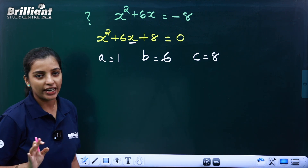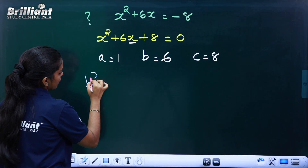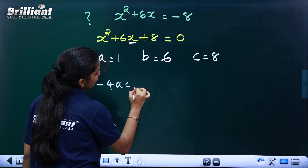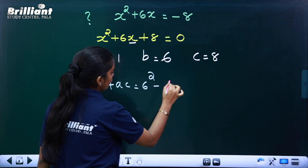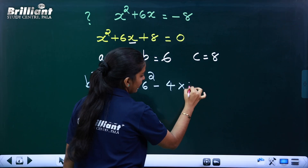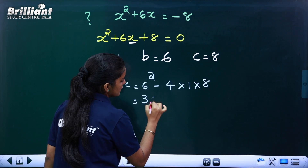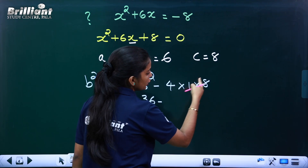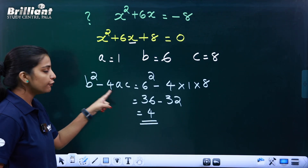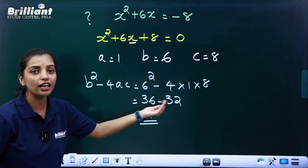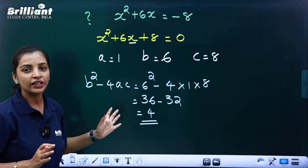Now we determine the discriminant value: b² minus 4 into 1 into 8. That is 6 squared, which is 36, minus 4 into 1 into 8, which is 32. So the discriminant is 36 minus 32 equals 4. Since the value is positive, we have two different real roots.